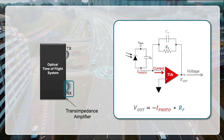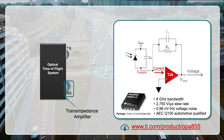Another key component used in the receive portion of an optical time-of-flight system is the transimpedance amplifier, or TIA. The TIA's main job is to convert the current from a photo detector into a voltage so it can be used by the system. Texas Instruments offers several discrete amplifiers, like the OPA855 8 GHz op amp, that can be used as a discrete TIA or as a high bandwidth voltage amplifier to amplify the signal coming from the photo detector.